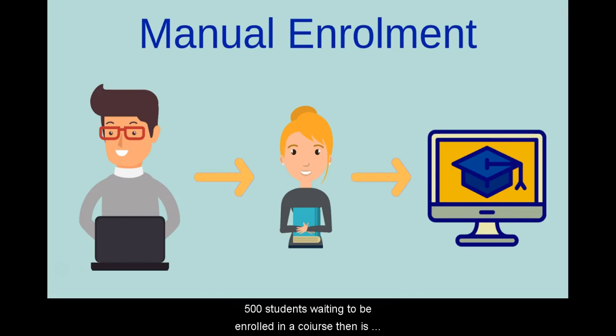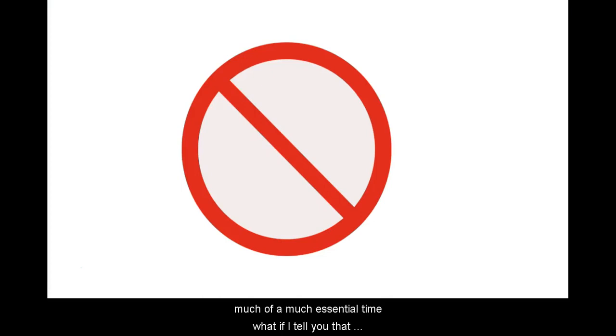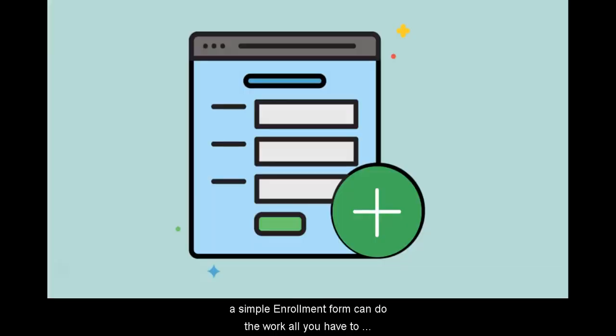Now imagine this: if there are 500 students waiting to be enrolled in a course, then is enrolling them one by one manually a feasible option for you? Guess not. It is just going to take too much of your essential time. What if I tell you that there is actually an alternate option for enrolling such a large number of users without wasting time on manual work?